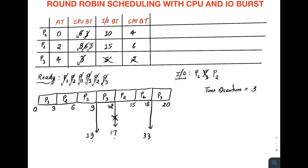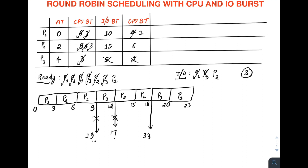Before time 20, at time 19, P1 completes its I/O and enters the ready queue. After P3 terminates at 20, we give the CPU to P1 for three units: 20 to 23. P1 has one unit remaining, and at time 23 no other process is present, so P1 gets the CPU from 23 to 24 and terminates.